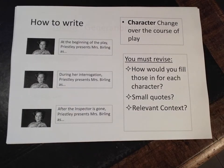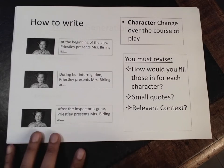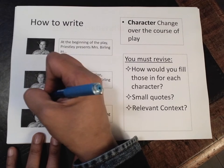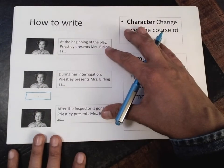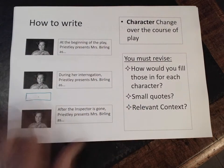If you're analyzing character, the emphasis for me is the idea of change. Characters are presented before the inspector shows up, then during the interrogation — how the inspector questions them — and then afterwards towards the end of the play, either after the inspector leaves or in the final moments. That is a really easy trajectory to encapsulate the whole play. Ultimately, the interrogation is going to be the more profound section, so this might actually be two paragraphs, or alternatively you can make it one very large paragraph.